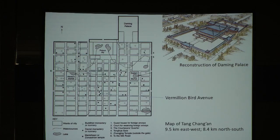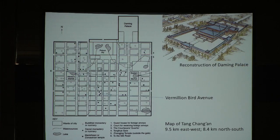Outside the original city plan, the Daming Palace was added in 634. Immediately south of the imperial palace was the imperial city, where governmental offices were located. The eastern and western markets were prominently placed as centers of economic life. By the mid-8th century, Chang'an was the largest and most populous city in the world, with about 2 million people in the metropolitan region, half of them living within the walled city.